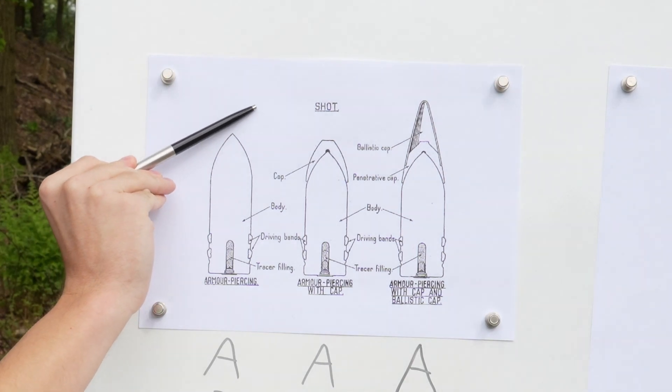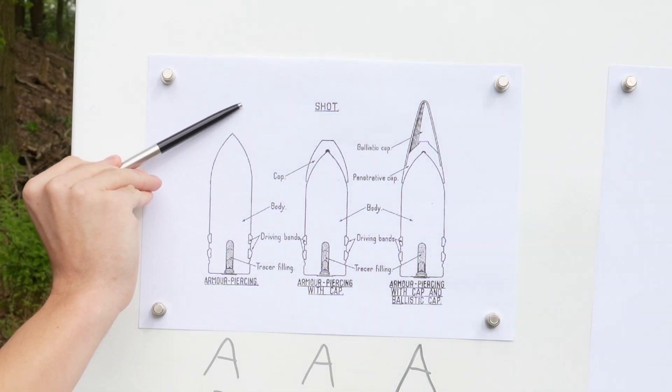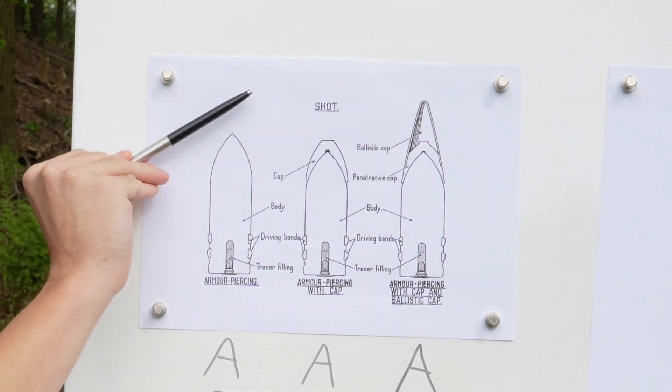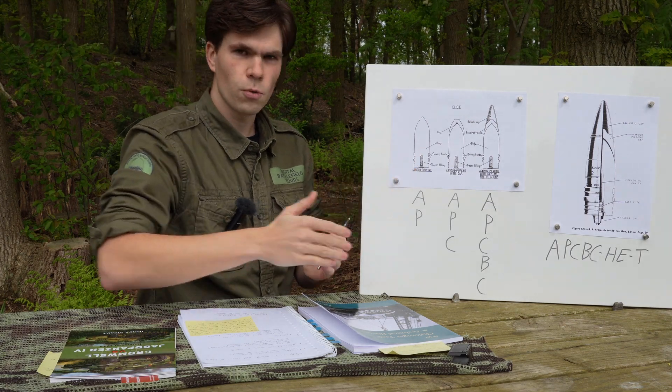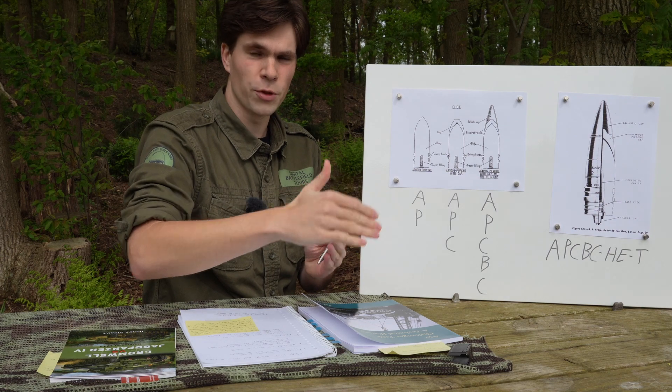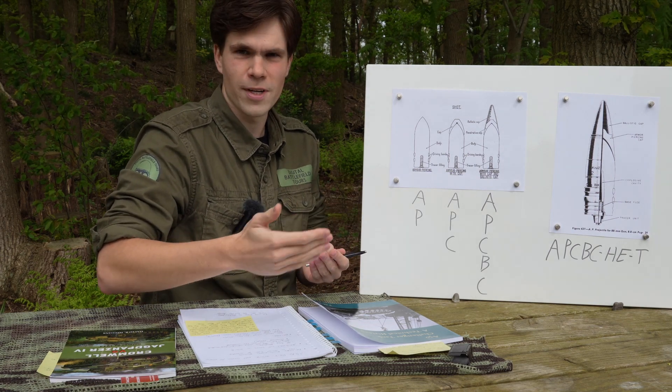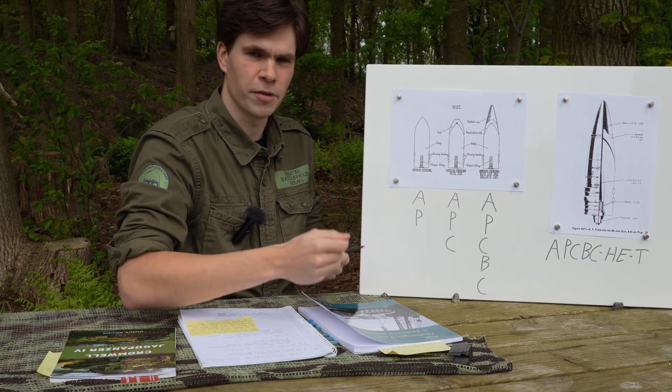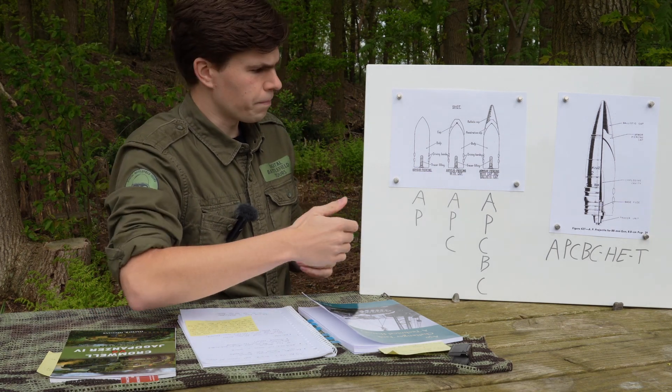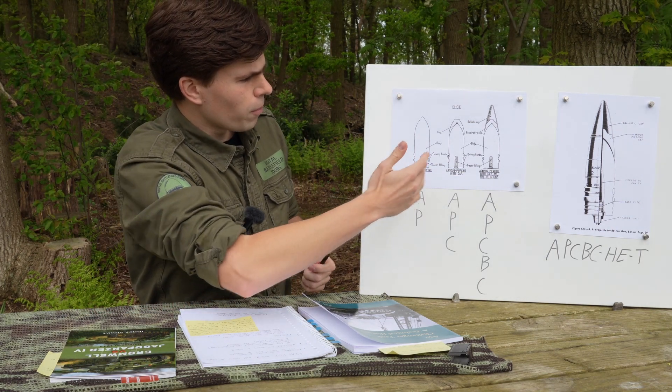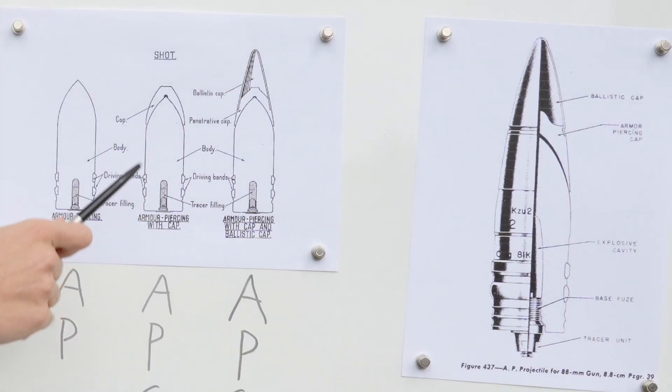Or what can also happen if it is a very hard armor plate and it hits at an angle is you get a lot of pressure on the side of the tip and it will just break off. The entire shot will shatter on the armor plate which ruins its potential of actually punching through.